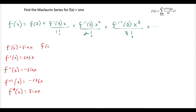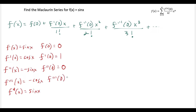Now we evaluate everything at 0. Sin of 0 equals 0. Plugging 0 into the first derivative gives us 1. Plugging 0 into the second derivative gives us 0, because we have negative sine 0. The third derivative at 0 gives us negative 1 because negative cosine 0 is negative 1. So the pattern is 0, 1, 0, negative 1, and then it goes back to 0.